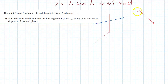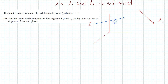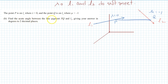Now the question says: P is on L1 where lambda equals 0, and Q is on L2 where mu equals minus 1. We need to find the acute angle between the line segment PQ and line L1. Let's set up the diagram — this is line L1 and L2, P is on L1 and Q is on L2, and we need to find the angle between PQ and L1.